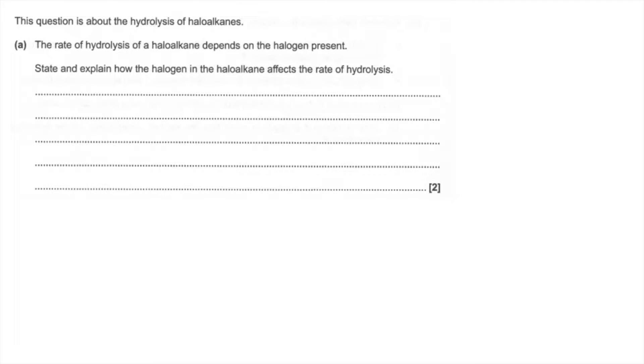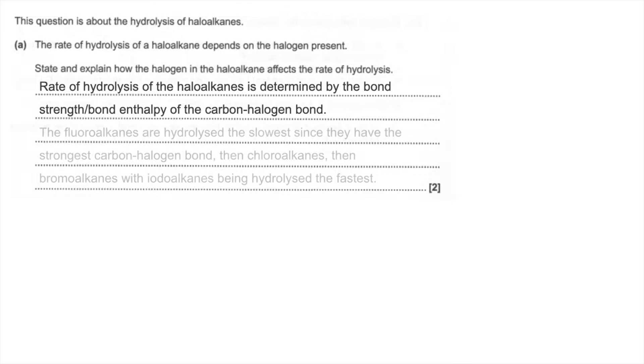Part A: state and explain how the halogen in the haloalkane affects the rate of hydrolysis. So the first thing I'm saying is the rate of hydrolysis of haloalkanes is determined by the bond strength or the bond enthalpy of the carbon-halogen bond. So the fluoroalkanes are hydrolyzed the slowest because they have the strongest carbon-halogen bond.